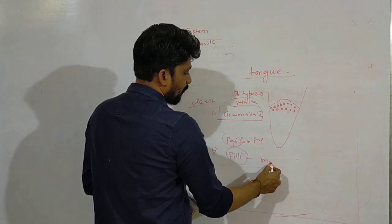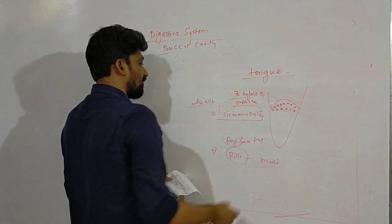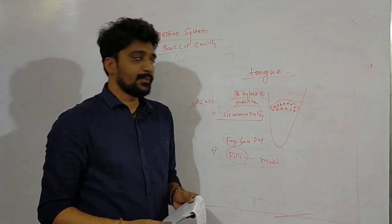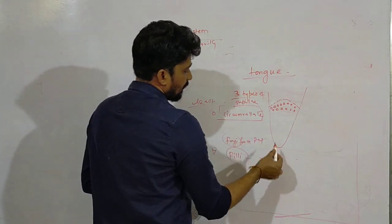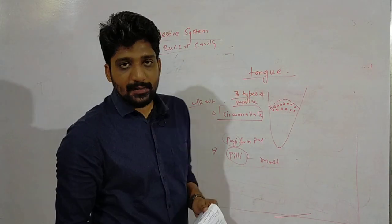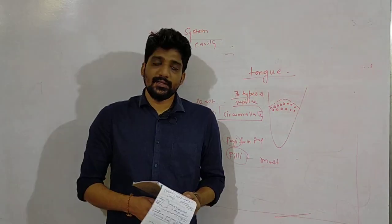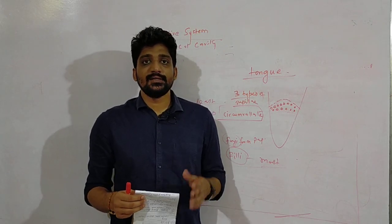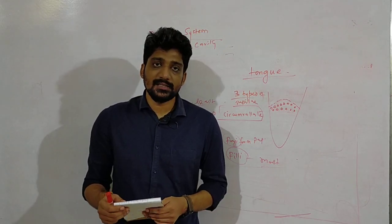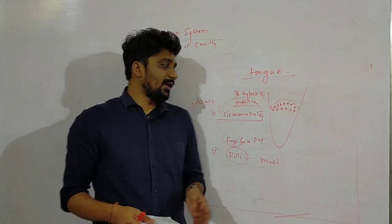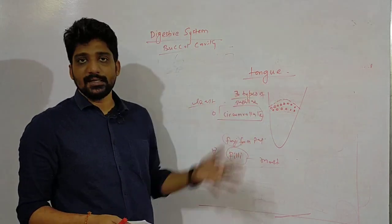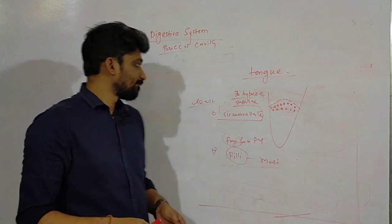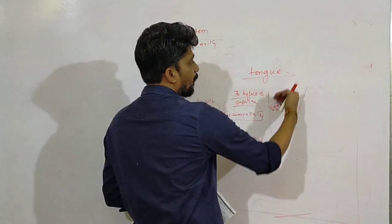Circumvallate is least in number whereas filiform is most in number and fungiform is moderate. Now these papillae are surrounded by blood vessels and surrounding the blood vessels we have nerves. These nerves have the sensation which gives us the taste of the food - we have sweet or salt bitter taste according to that.